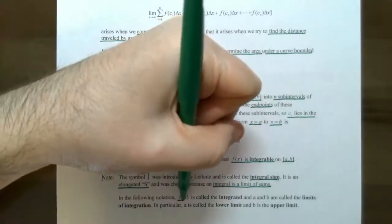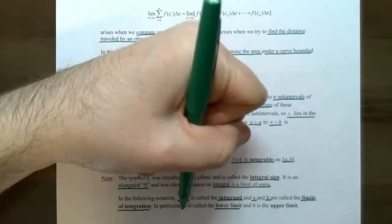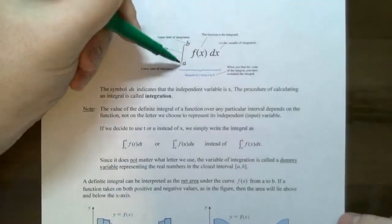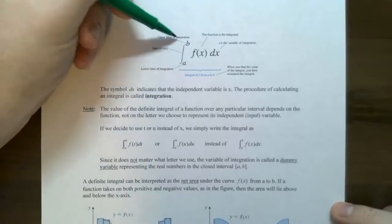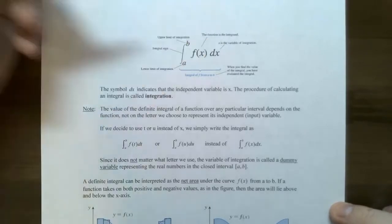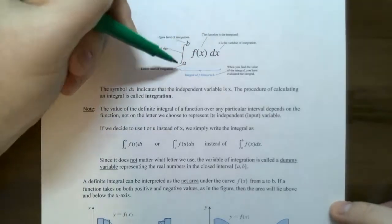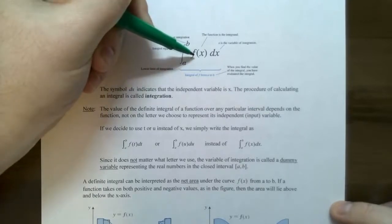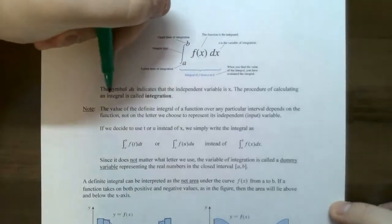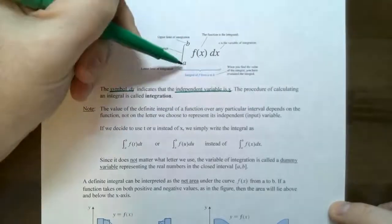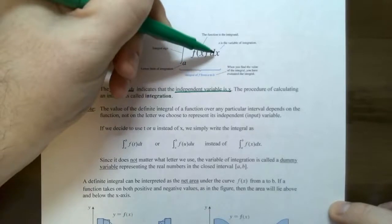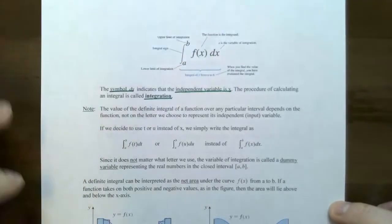To summarize the terminology: f of x is called the integrand; a and b are the lower and upper limits of integration. The integral sign is an elongated S; dx represents the variable of integration. You would read this as 'the integral from x equals a to x equals b of f of x with respect to x.' The symbol dx tells you the independent variable is x, so the limits of integration are assumed to be x equals a and x equals b. The process of finding the area under the curve is called integration.